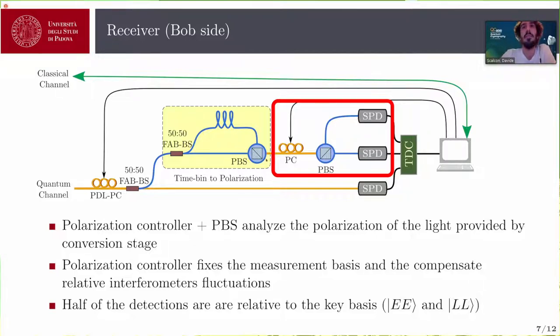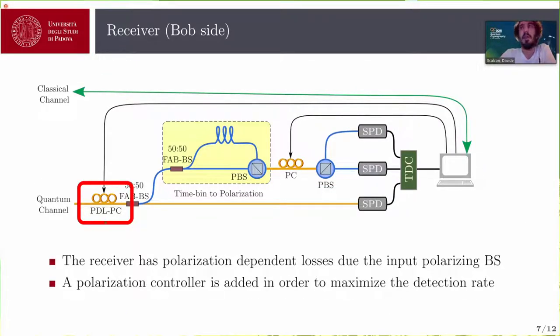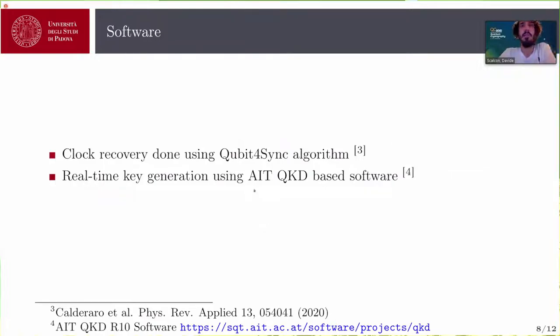So as I mentioned, the two interferometers are totally passive and the phase is compensated here with this polarization controller. The drawback is that this receiver has polarization dependent losses. And to mitigate the defect, we need to place at the input another polarization controller that has the only purpose to keep the detection rate constant over time. The software, as mentioned, has this qubit-per-sync algorithm at the receiver. And the technique can make us able to reconstruct the clock of the transmitter at the receiver side using only the data of the receiver qubits. And the key generation is done instead using the AIT QKD software.